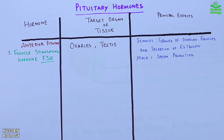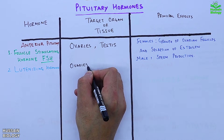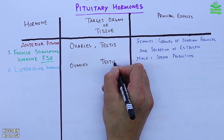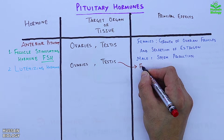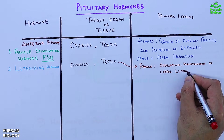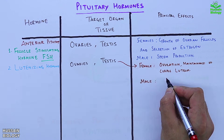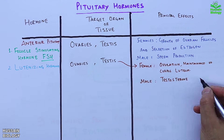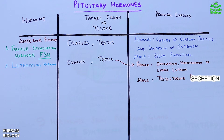The second hormone is luteinizing hormone (LH). It also targets the gonads — testes and ovaries. Its principal effects include ovulation and maintenance of the corpus luteum in females, and in males it stimulates testosterone secretion.